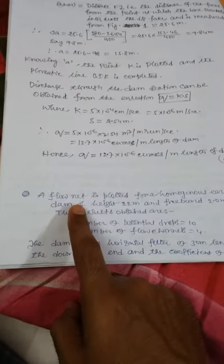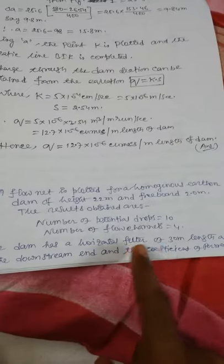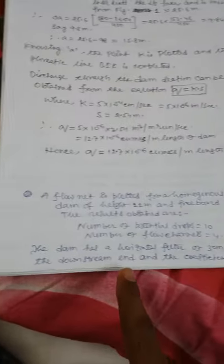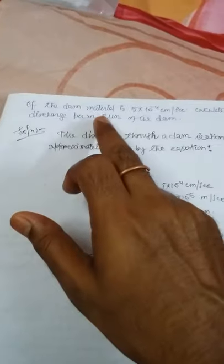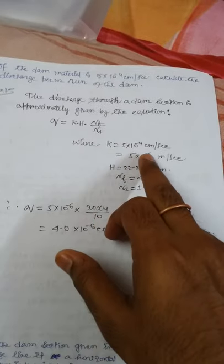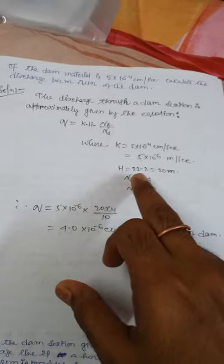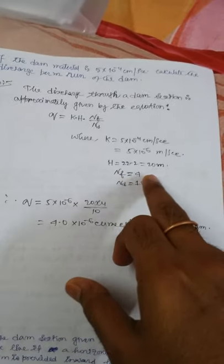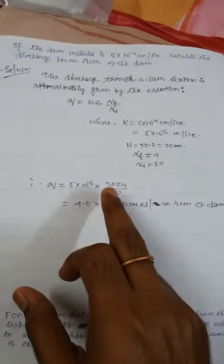If a flow net is plotted for a homogeneous urban dam of height 22 meter and freeboard 2.0 meter, the results obtained are: number of potential drops 110, number of flow channels 74. The dam has a horizontal filter of 30 meter length at the downstream end and the coefficient of permeability is 5 into 10 to the minus 4 centimeter per second. The discharge through the dam section is given by Q equals kh times nf by nd, where k equals 5 into 10 to the minus 6 meter per second, h equals 20 meter, nf equals 4, nd equals 10. Q equals 4.0 into 10 to the minus 6 cubic meter per meter.